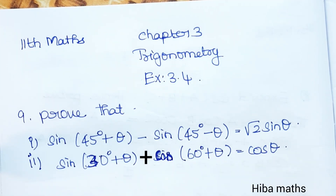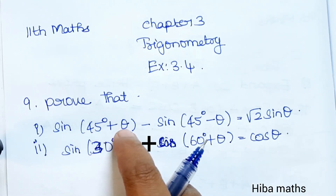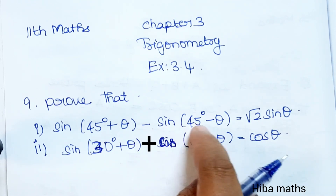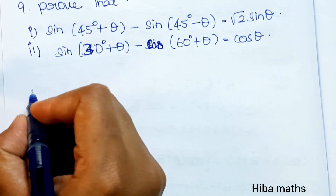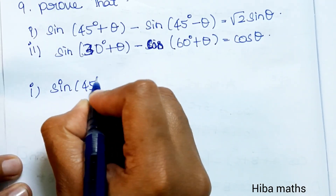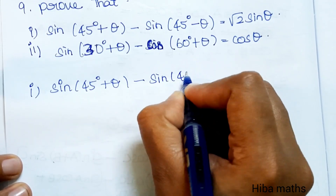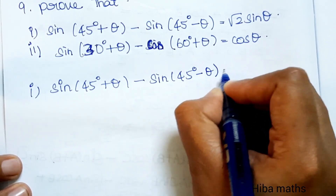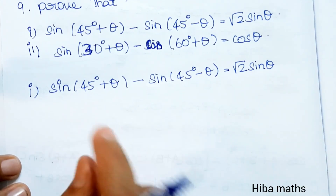Hello students, welcome to Hiba Maths. 11th standard, Chapter 3 Trigonometry, Exercise 3.4, Question 9. Prove that sin(45°+θ) minus sin(45°-θ) is equal to √2·sinθ. For the solution, we take the LHS: sin(45°+θ) minus sin(45°-θ) equals √2·sinθ.